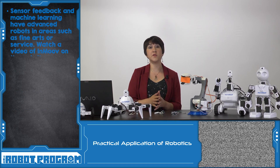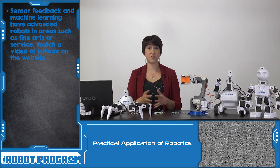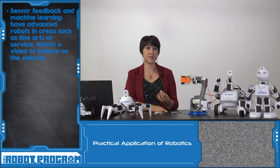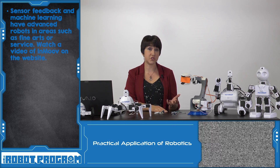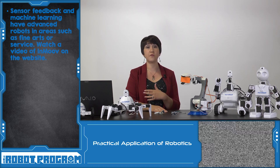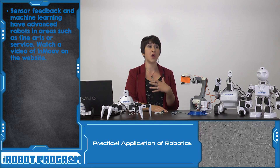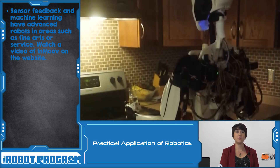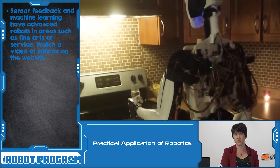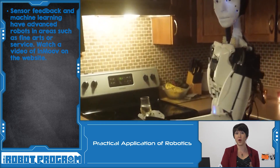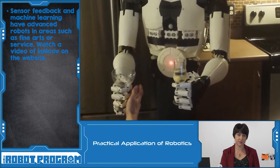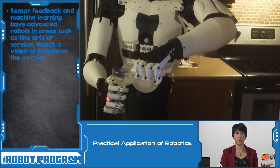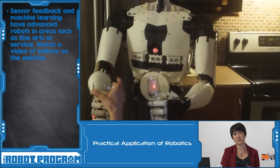Modern robotics can also be used in fine arts or service. Using sensory feedback and control systems, we can have robotic musicians or robotic artists that use artificial intelligence to learn about different patterns in art. We even see robots in the service industry — something like the InMove robot demonstrated in previous episodes is able to pour a glass of wine for a human who maybe can't get up and get to the kitchen themselves.